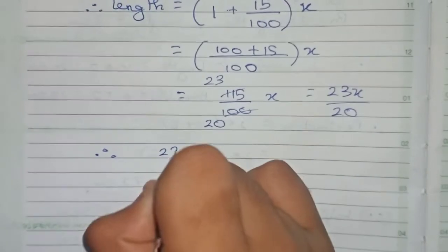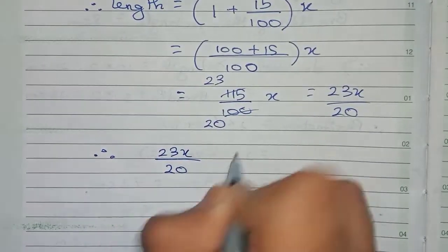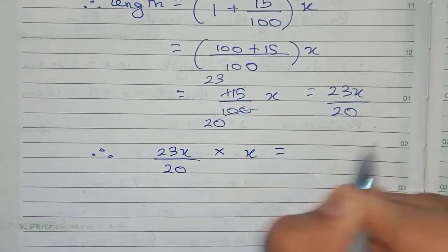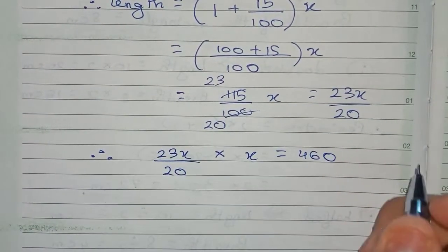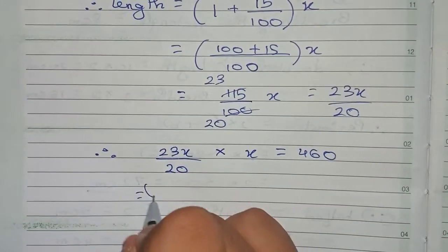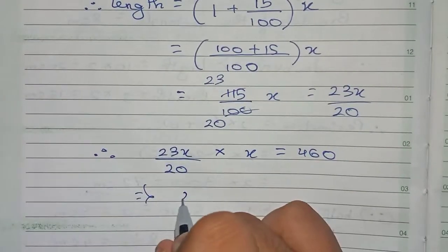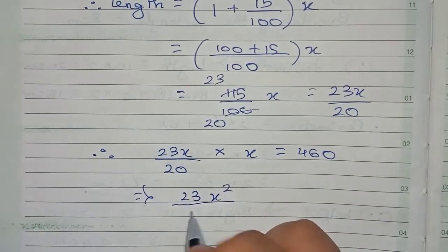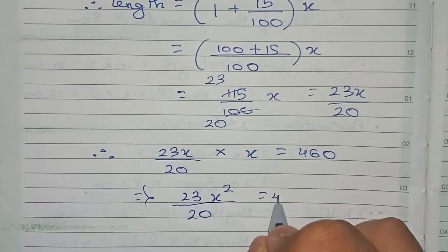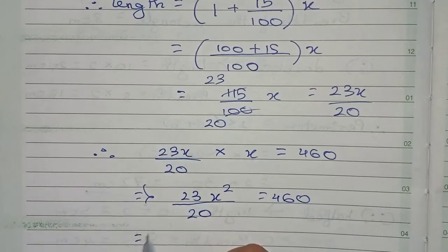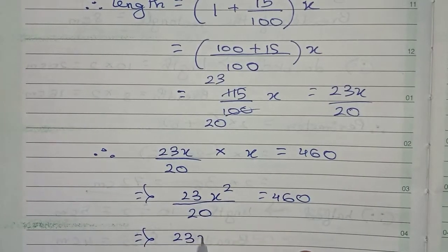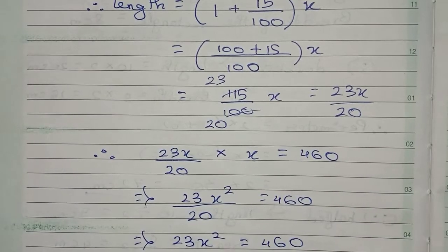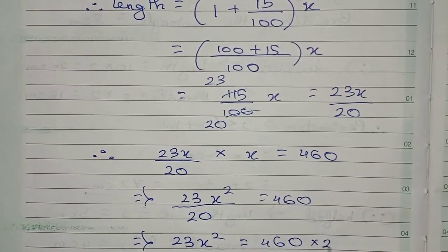So our equation is 23x by 20 into x equals 460. That gives us 23x squared by 20 equals 460. Now, taking 20 from the left side to the right side, it goes for multiplication, so 23x squared equals 460 into 20.